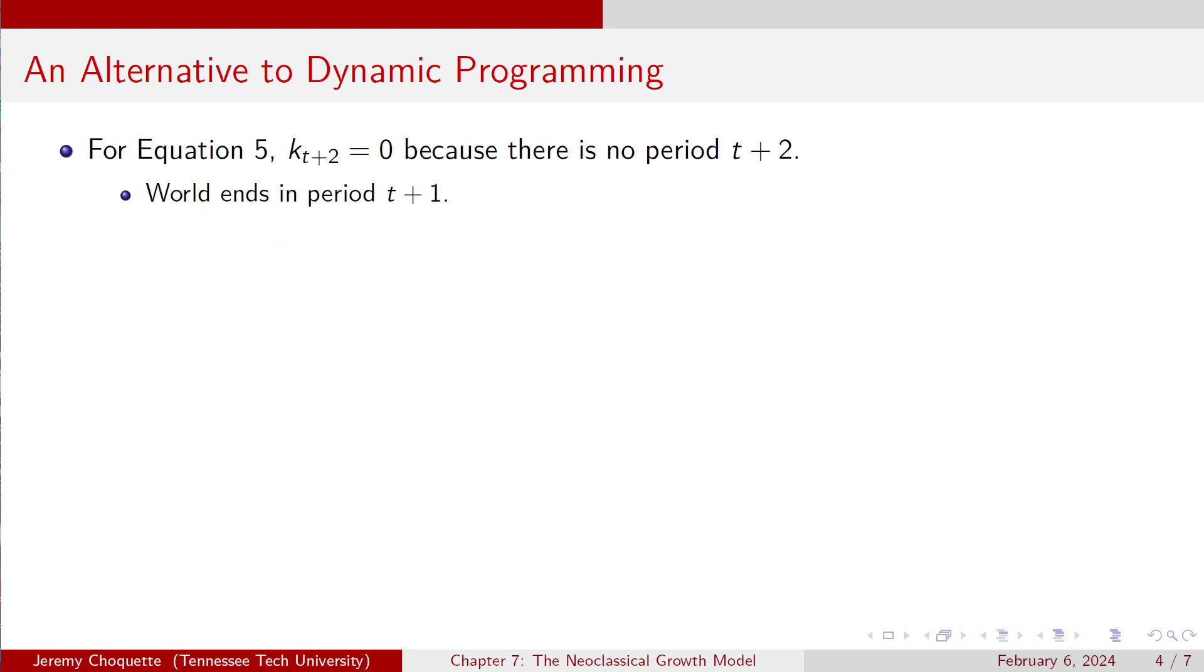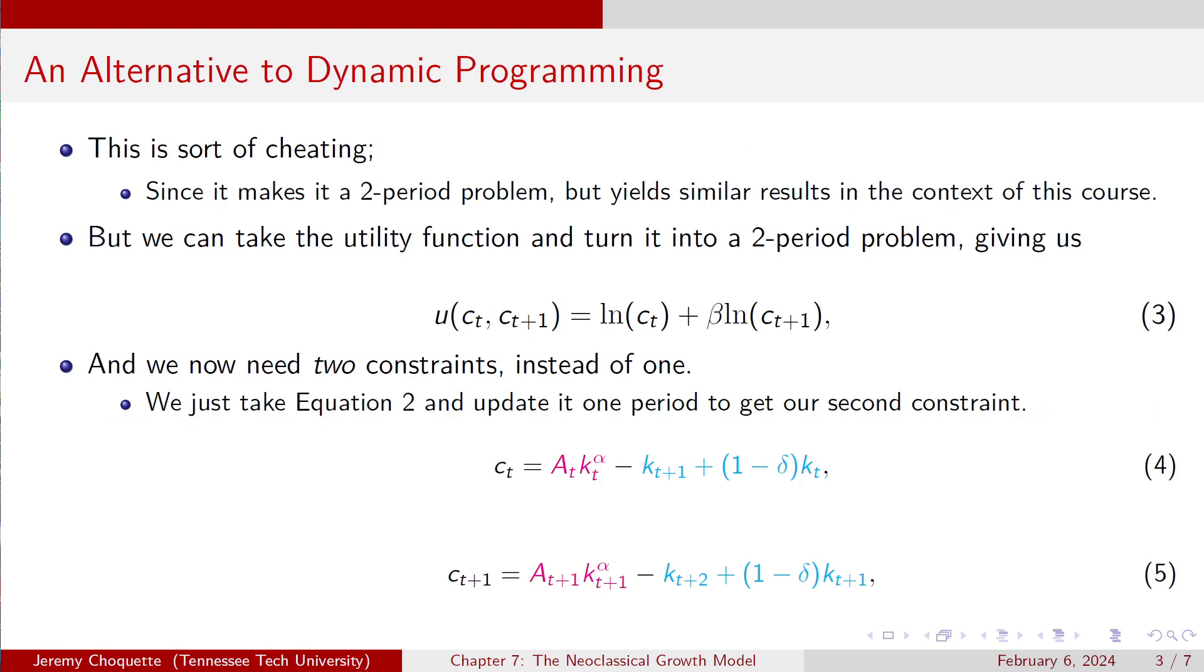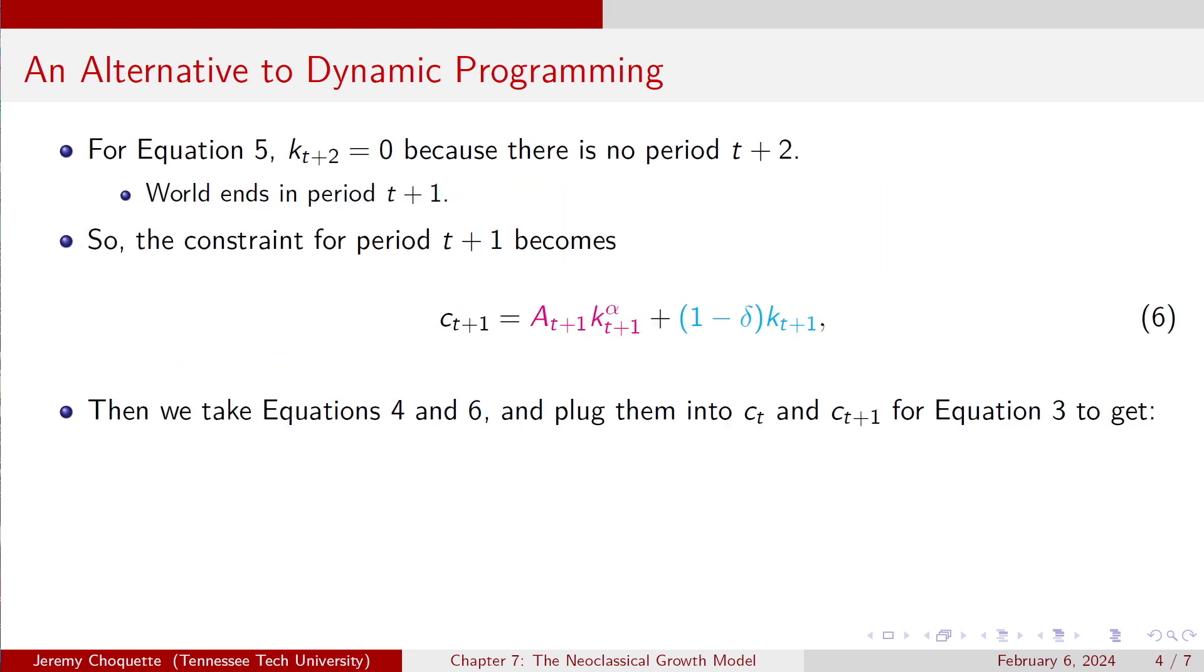So I take equations 4 and 6. What was equation 4? Well, 4 is that constraint today. Equation 6 is tomorrow's constraint. I plug them into ct and ct plus 1 for equation 3. And that gives me this guy. Now, I've got u of kt and kt plus 1 equals the natural log of at kt to the alpha minus kt plus 1 plus 1 minus delta kt. All right. We've seen that constraint ad nauseum. All right. That's a second one. Plus beta times the natural log of at plus 1 kt plus 1 to the alpha plus 1 minus delta kt plus 1. Okay. Not too bad.